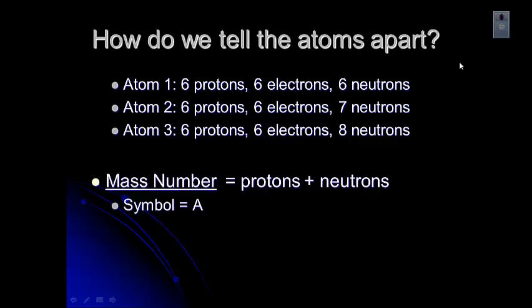The mass number is equal to the protons plus the neutrons. If we look at these different atoms, this atom has a mass number of six plus six, so that would have a mass number of 12. Atom two has a mass number of six plus seven, so a mass number of 13. And then atom three has six protons and eight neutrons, and if we add that, that would give us a mass number of 14. So those are different mass numbers, and that's how we can describe that.